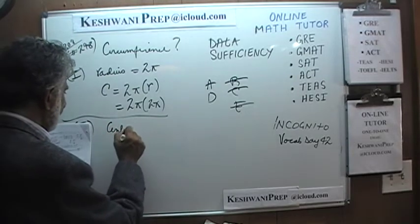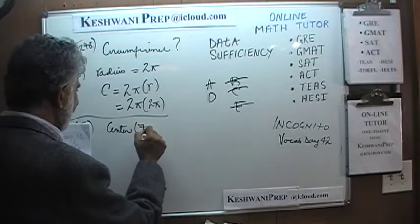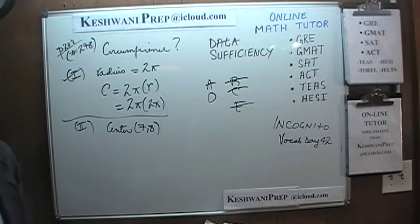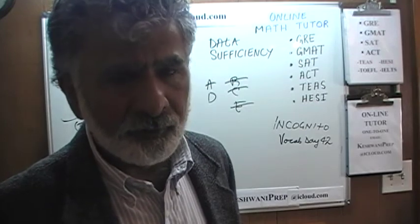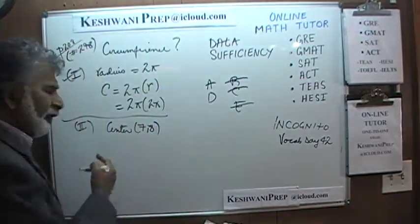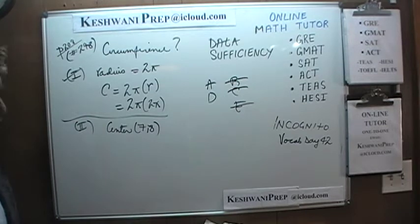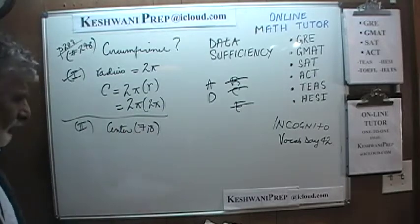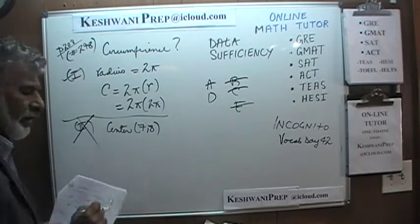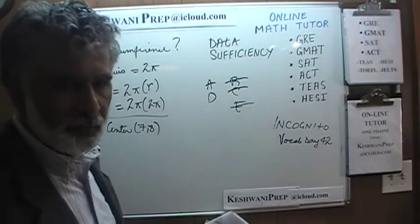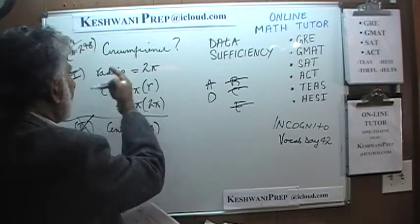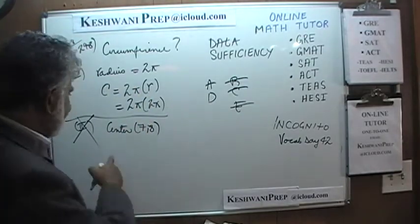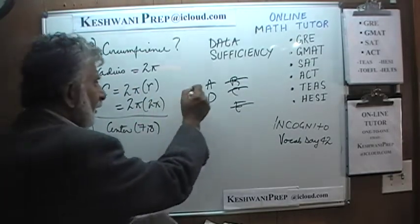The second statement tells us that the center of the circle is at coordinates (7, 8). Simply knowing the center of the circle gives us no information about the radius — we would need coordinates of a point on the circle itself to figure out the radius. Without the radius, we cannot find the circumference. The second statement by itself is not enough, so the answer is A.